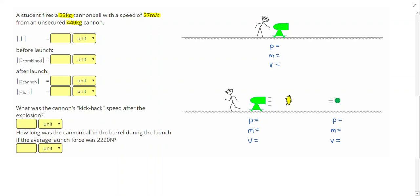This question asks us about impulse and impact force, so to set up my problem, I'm going to write J for impulse, F for force, and T for time. Filling out our givens, 23 kilograms is the mass of the cannonball. 440 kilograms is the mass of the cannon.